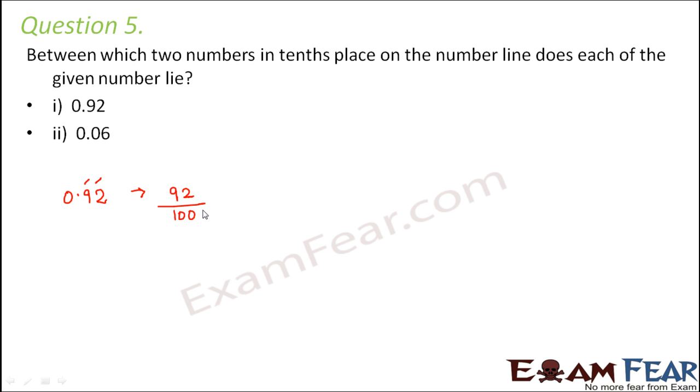So two zeros. So this can be very well written as 90 plus 2 divided by 100. So this can be written as 90 by 100 plus 2 by 100. Now this is 90 by 100. What would be 90 by 100? You have two zeros. So you will place the decimal point before two digits. So it would be 0.9 plus 0.02.